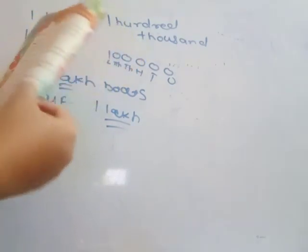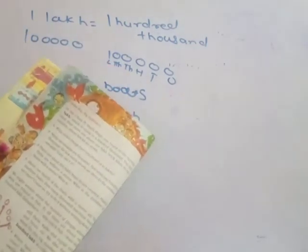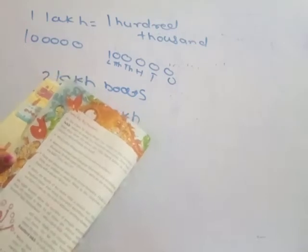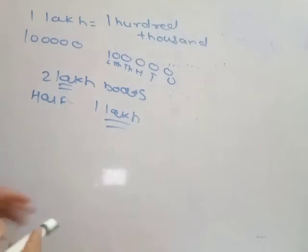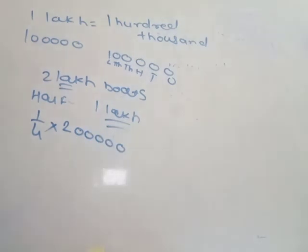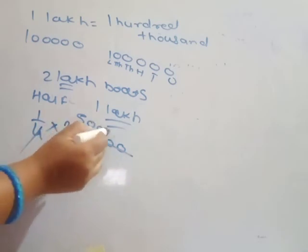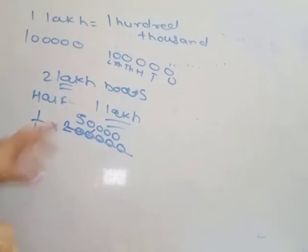About one-fourth of the boats with a motor are big machine boats. Out of 2 lakh boats, half are without motor, so 1 lakh have motors. One-fourth of 1 lakh: 2 lakh has 5 zeros, divide by 4 — 4 fives are 20 — leaving 50,000. So out of 2 lakh boats, 50,000 are machine boats.